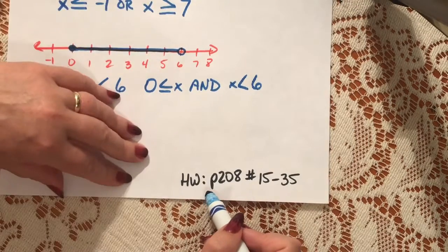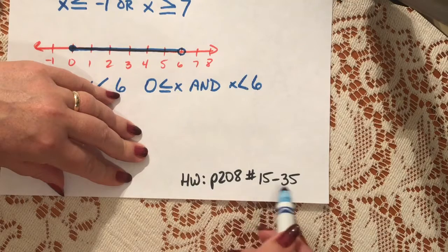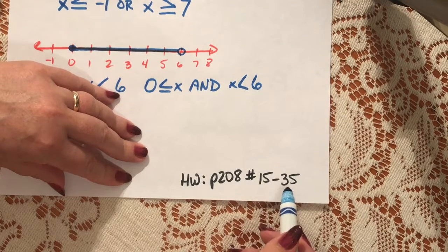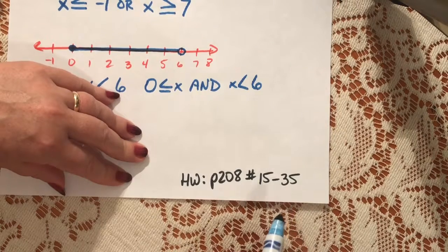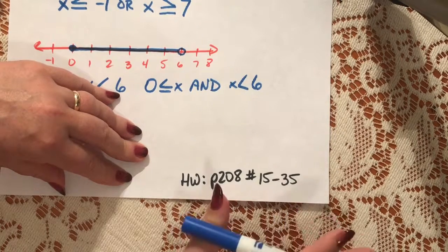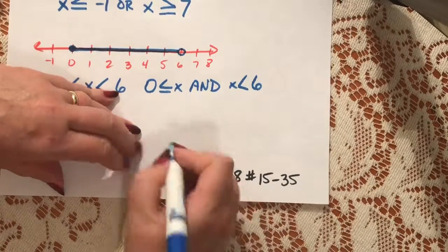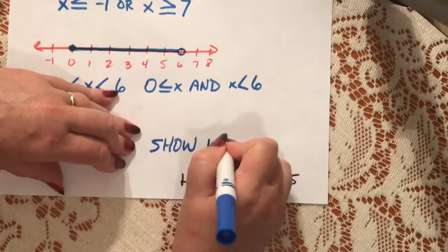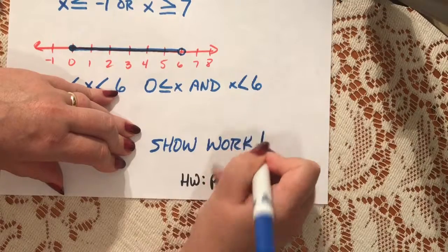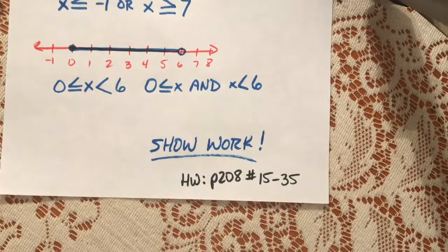Your homework for tonight is page 208, numbers 15 to 35. Please make sure you ask if you have any questions. There's a test coming up soon — we have one more section before our test, so make sure you understand everything and show all of your work. Thank you and I'll see you tomorrow.